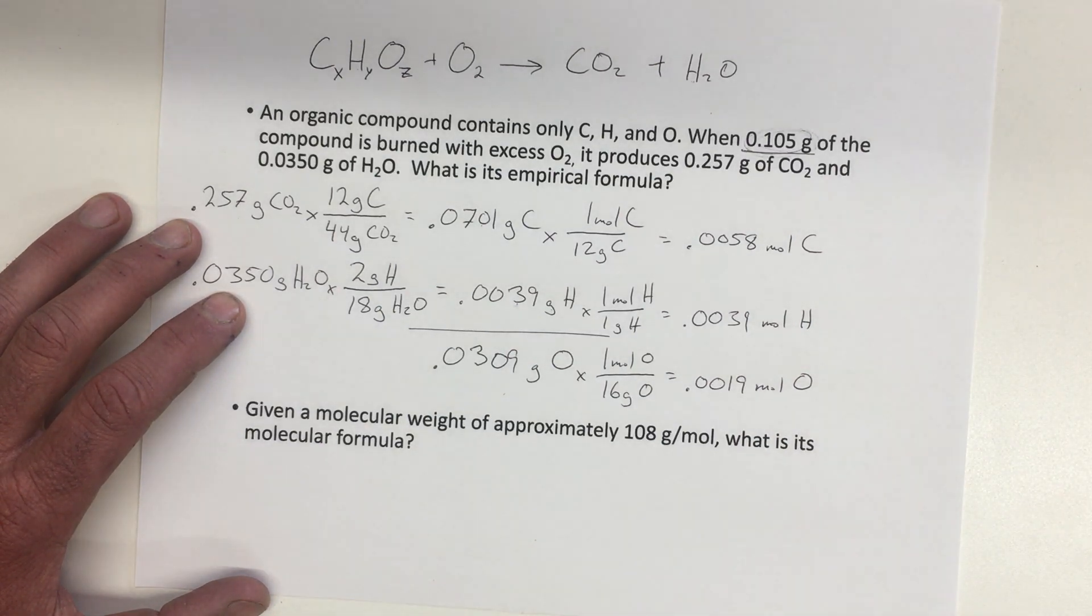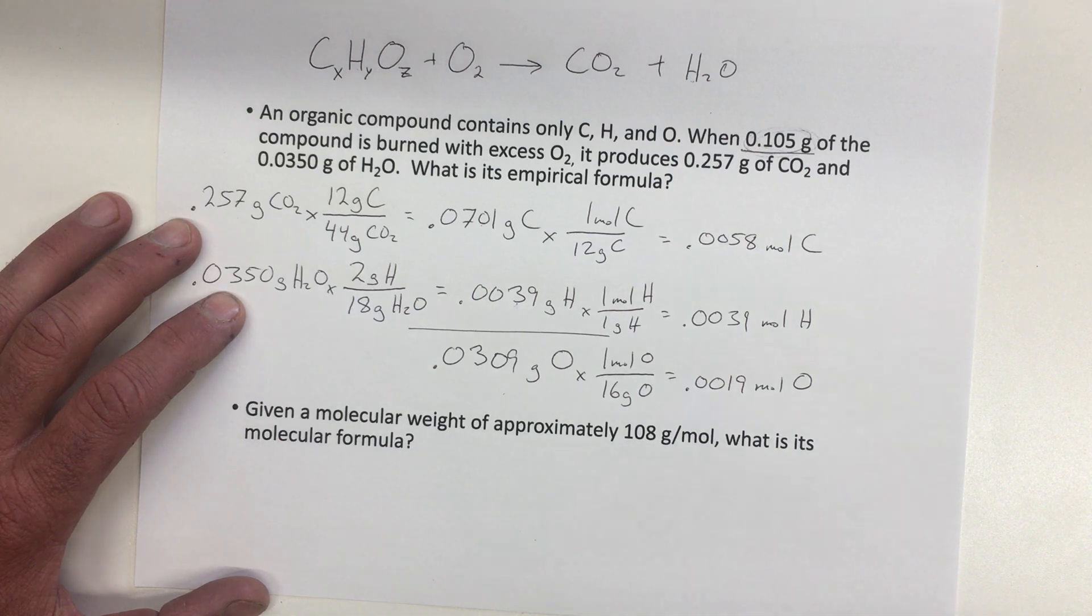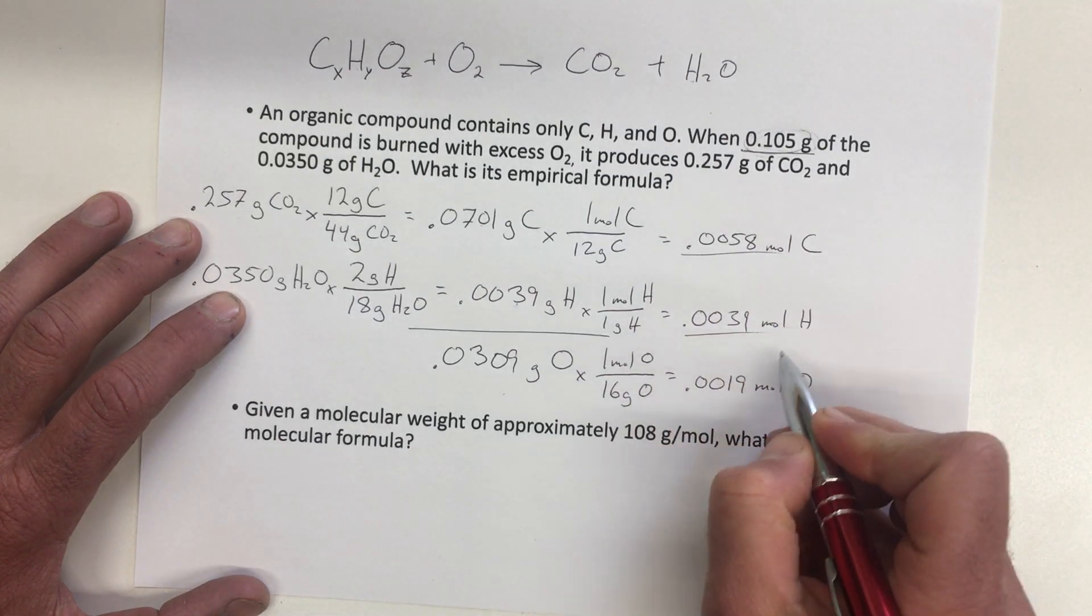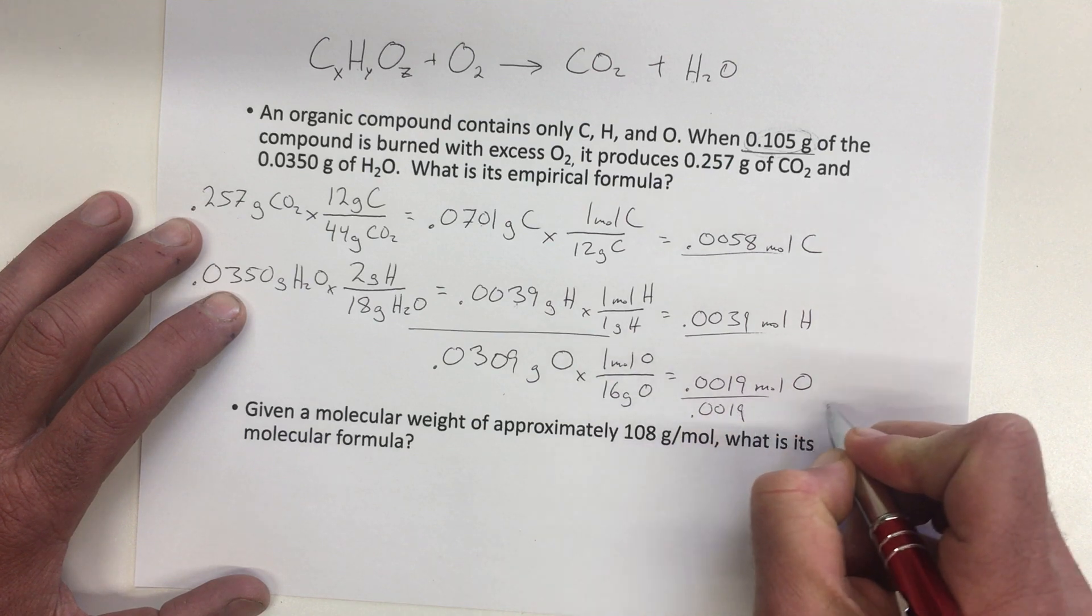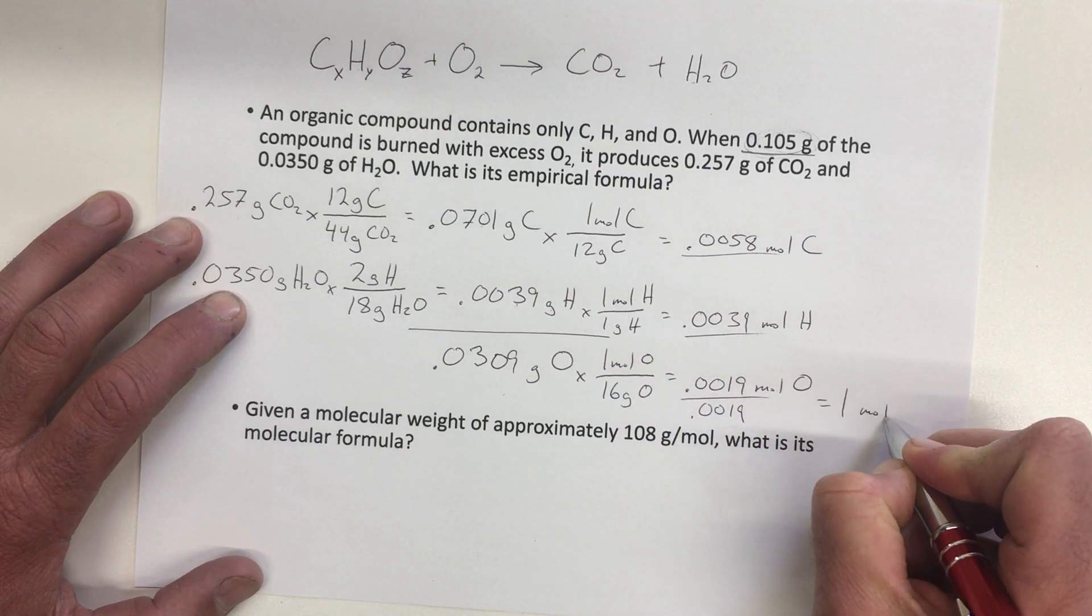And so in order to put that into a whole number ratio, the easiest way to do that is usually to divide them all by the smallest number. And so of these, the smallest number is this one with the oxygen. 0.0019, so that's one mole of oxygen.